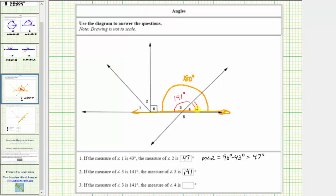The measure of angle 4 is equal to 180 degrees minus 141 degrees, or 39 degrees.